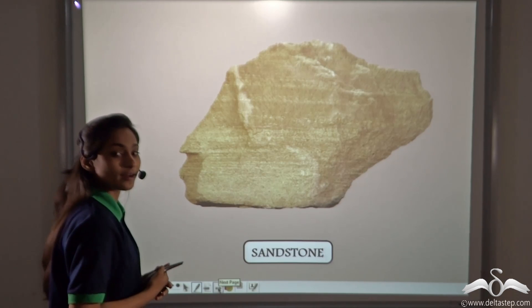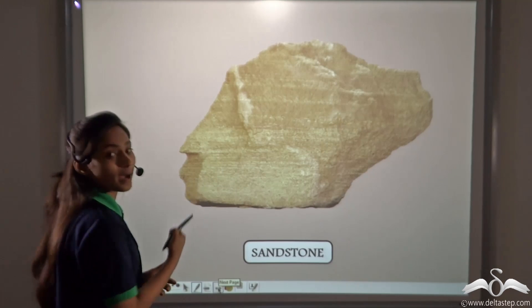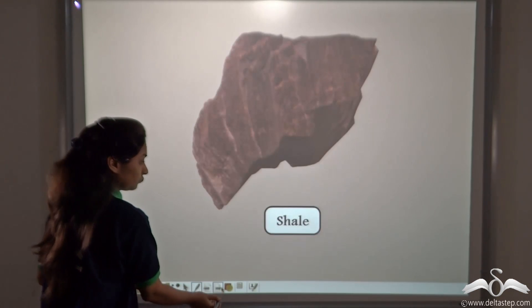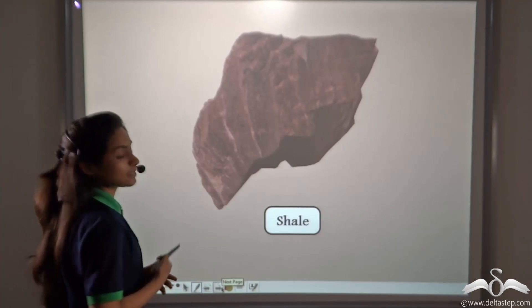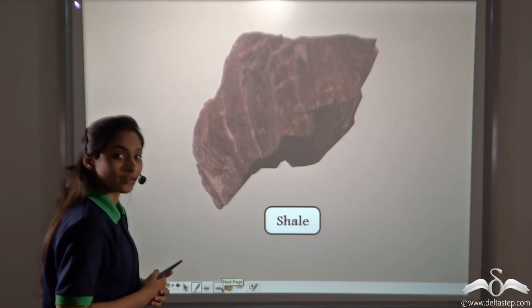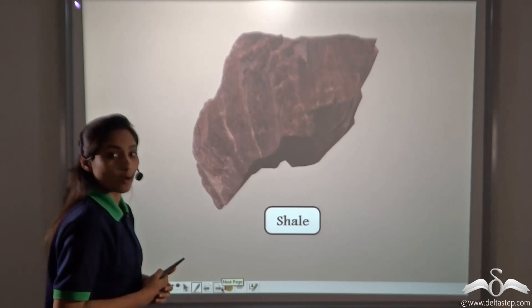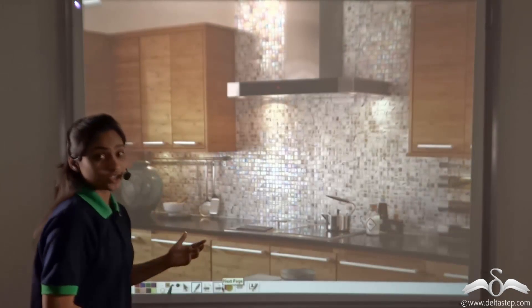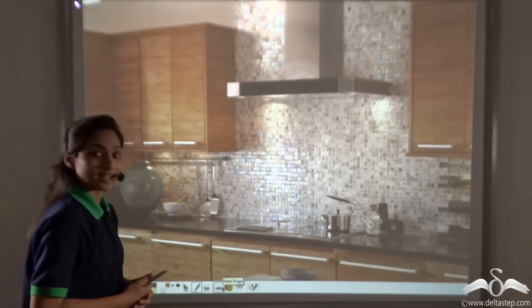Sandstone is a sedimentary rock made by the deposition of sand. This is shale, also a type of sedimentary rock. It is made by deposition of mud or clay. Shale is used in making tiles.